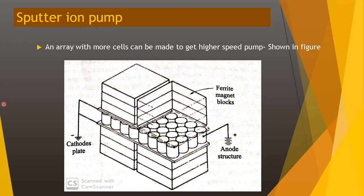An array of more cells can be used to achieve a higher speed pump. Many cathode-anode combinations are placed together. These are the anode structures, and both ends of each anode are fitted with cathode plates connected to ground. This arrangement represents a sputter ion pump array, where combining multiple cells produces a higher pumping speed.